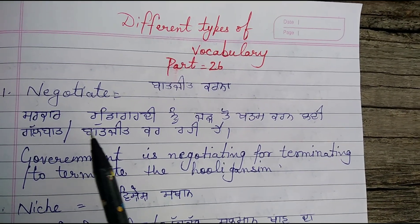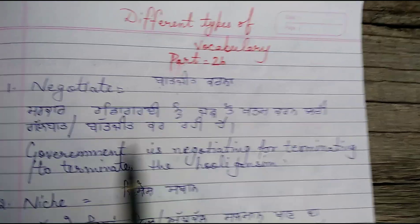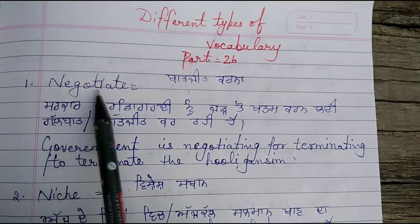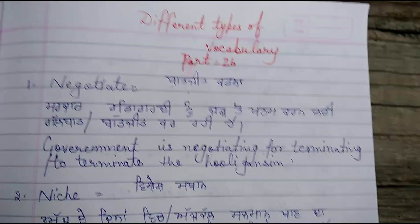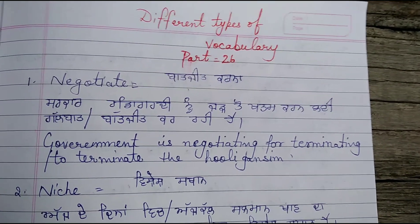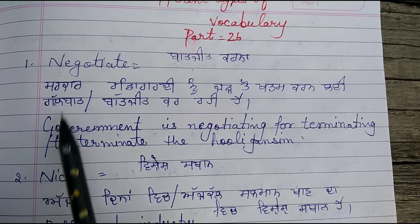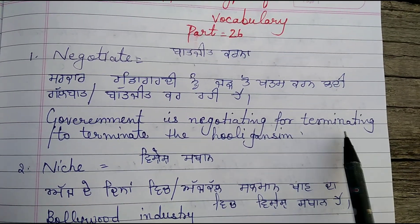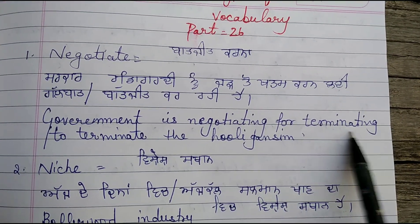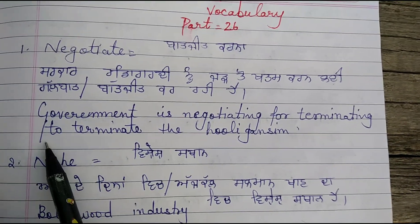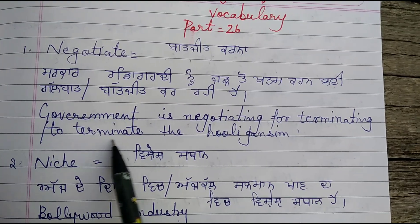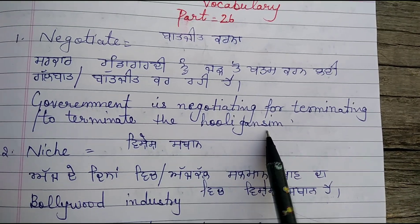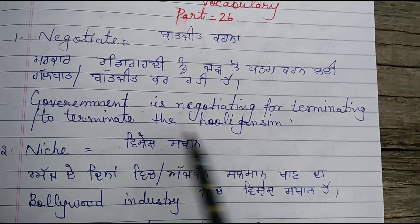The first word of this part is Negotiate. Instead of Negotiate, we can use Communicate, Interact, and Talk. Example: The Government is Negotiating for Terminating — the preposition means using the -ing form. You can also say: Government is Negotiating to Terminate the Hooliganism.